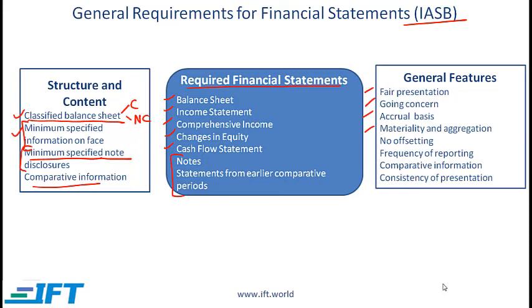You need to know the six qualitative characteristics and the reporting elements. Recognize the cost-benefit constraint and the two major assumptions: going concern and accrual-based accounting. At this stage, for the comparison of IFRS and US GAAP, you simply need to recognize that differences exist. As we go through the readings in financial reporting and analysis, we will highlight the major differences. Financial reporting standards are evolving fast — stay on top of changes from a user perspective, not a preparer or accountant perspective.